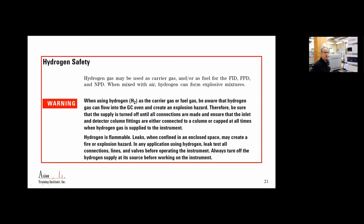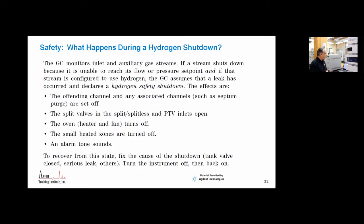So do be careful with hydrogen. Our biggest concern would be a column breaking inside the oven. Fortunately, the way I look at it is if a column breaks usually up close to the inlet, the pressure drop is so severe that the GC notices that and will generally shut down. What happens during the safety shutdown? The offending channel and any associated channels are shut down. All the split valves are open. We want to get rid of any trapped hydrogen that's in there. Nothing pressurized, the oven, the fans, all the electronic zones are turned off and the alarm, the European police car alarm, goes off. And when you have that problem, you can't simply press a button. You have to shut off the GC and turn it back on to resolve that.